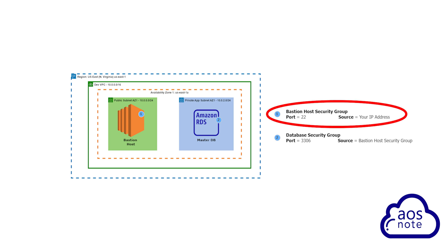The first security group you need is the SSH security group, and this is the security group we will attach to the bastion host. On this security group, you will open port 22 from your IP address.